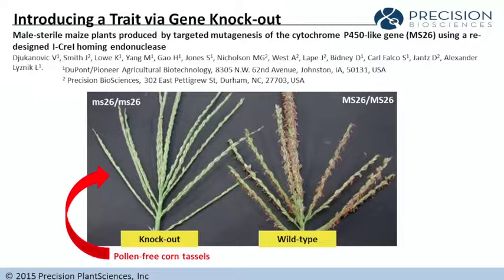I'm going to walk you through three or four examples of where this technology has been used and applied. These are published examples, so you can look these up if you want to later on. The first example is introducing a trait by gene knockin. This is a collaboration between Pioneer DuPont and Precision Biosciences. The idea was to create male sterile plants by targeted mutagenesis of a specific male sterility gene called MS26 by a redesigned I-CreI homing endonuclease. The bottom line shown here is by creating an endonuclease that will recognize a target site within this particular gene and introducing that meganuclease, the scientists at DuPont Pioneer were able to create maize lines that now have pollen-free corn tassels.